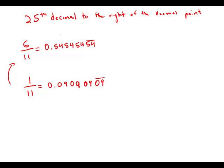So notice that every even digit after the decimal point is a 4, and every odd digit after the decimal point is a 5.